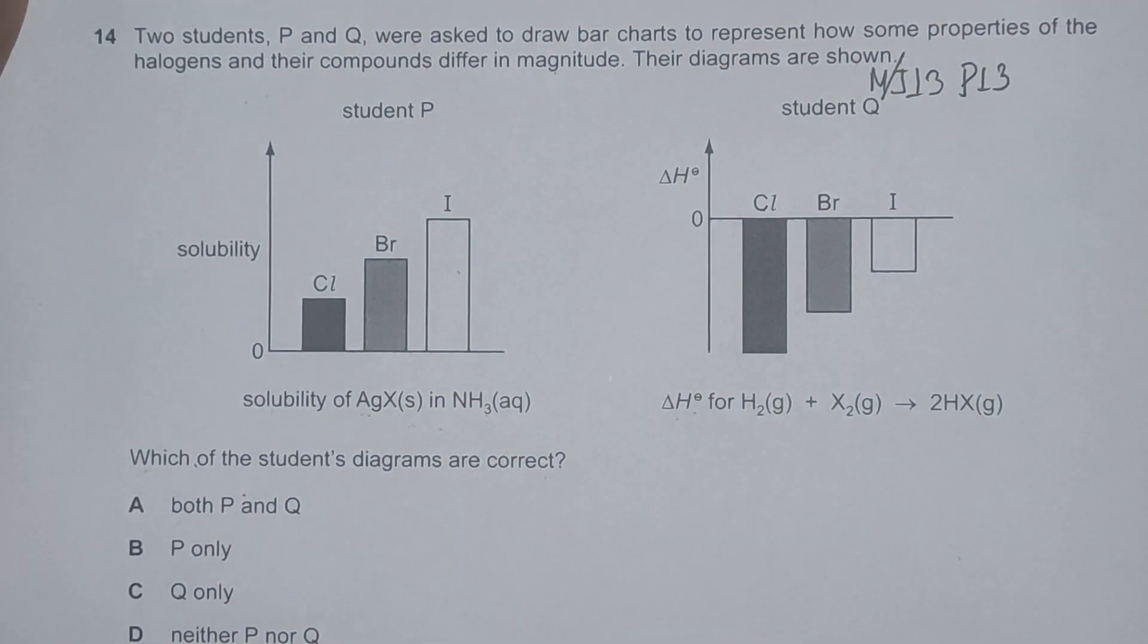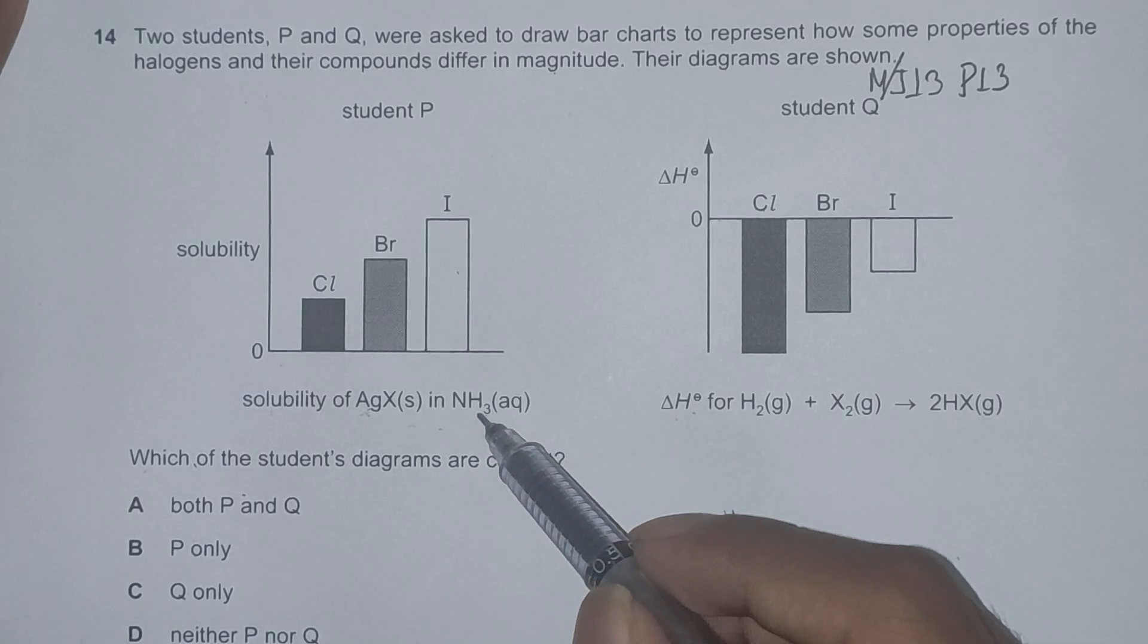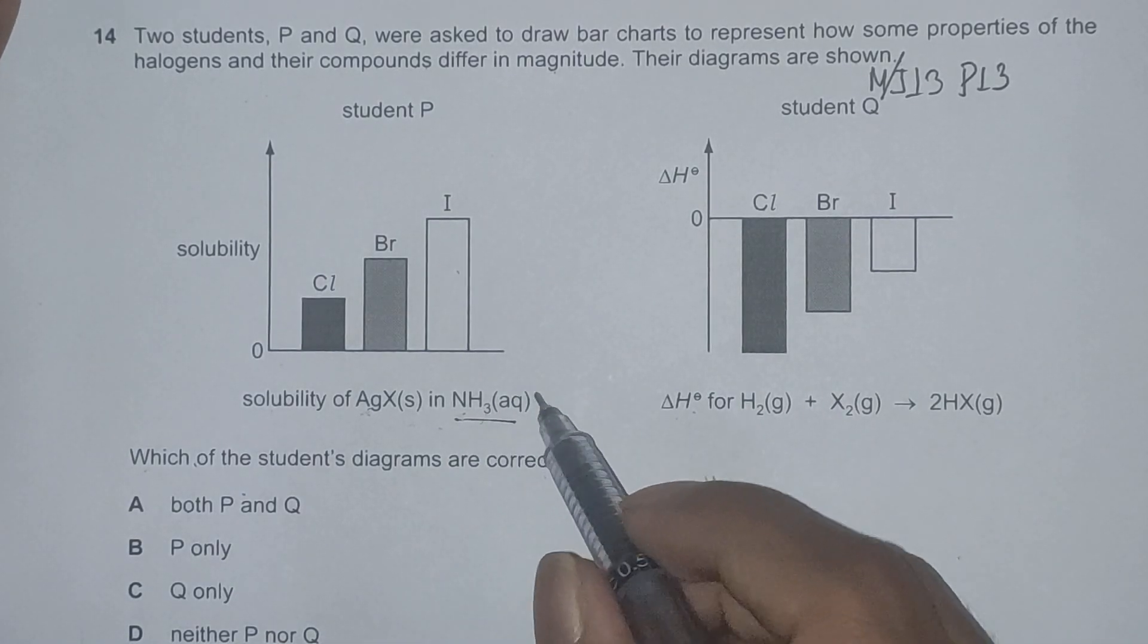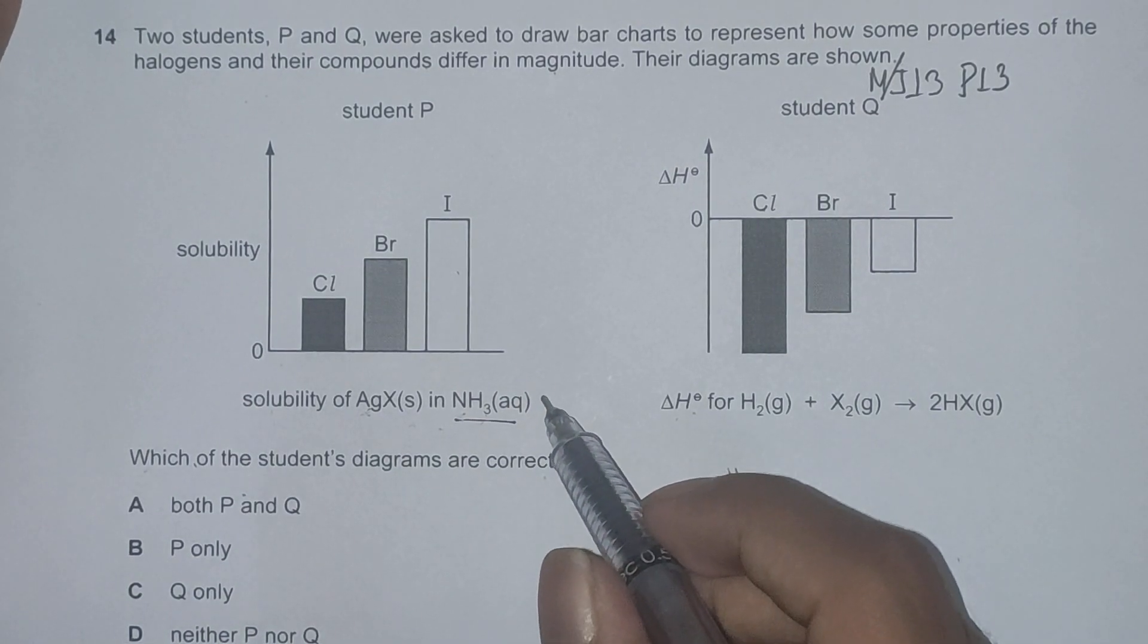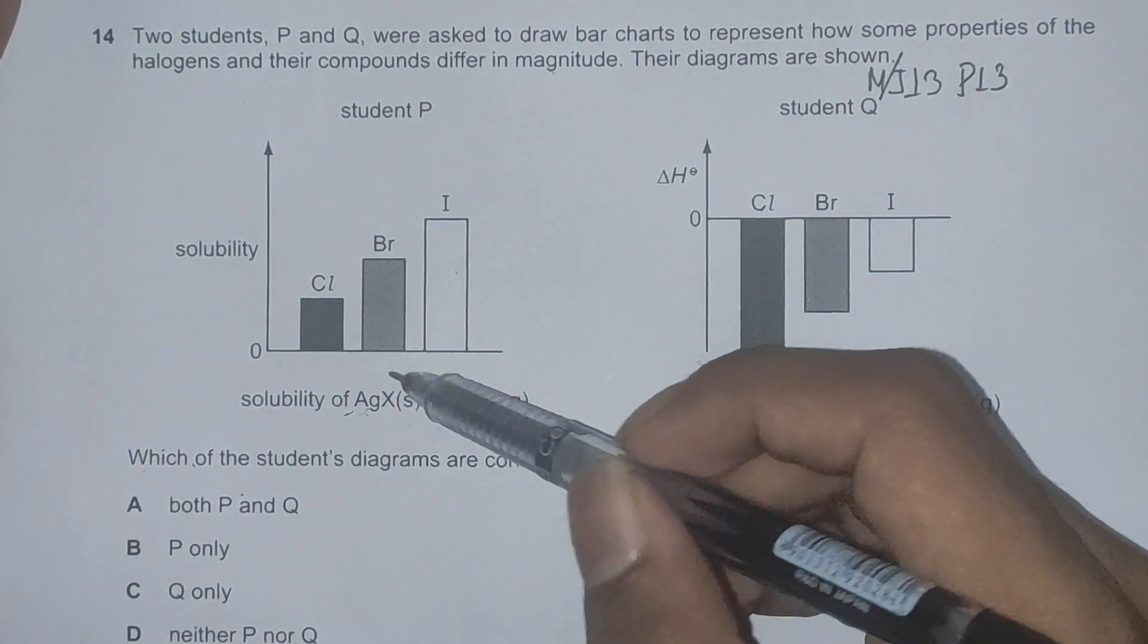First of all, considering student P, which is solubility of AgX in aqueous ammonia. We haven't been specified whether the ammonia is dilute or in concentrated state, so we'd have to consider it for both.